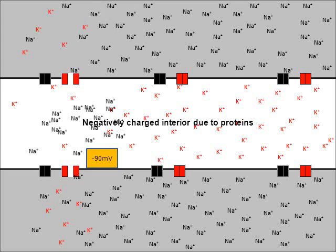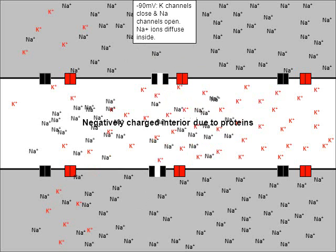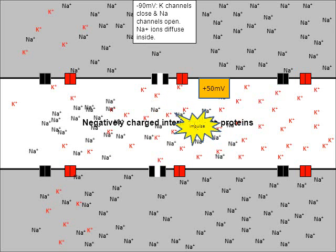Around negative 90, the red potassium channels will close. The sodium channels actually open around negative 40 millivolts, but because the potassium is exiting so rapidly, the charge continues down all the way to negative 90. Now that the next set of sodium channels are opened, we repeat — sodium will rapidly diffuse in, bringing the charge from negative 90 all the way up to positive 50 again. That's the impulse: the change from negative to positive, to negative to positive, and so on.